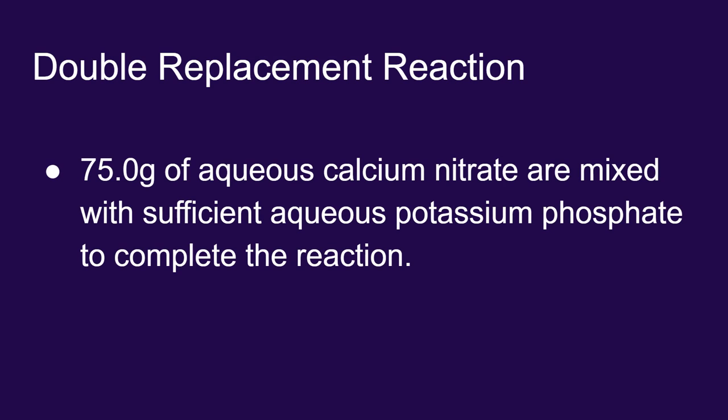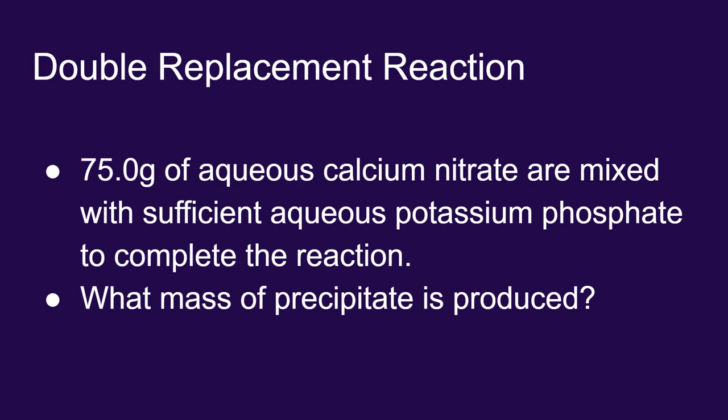Let's begin with 75 grams of aqueous calcium nitrate and mix it with a solution of potassium phosphate. We're told there's enough potassium phosphate to complete the reaction. All I want to know is what mass of precipitate will be produced.